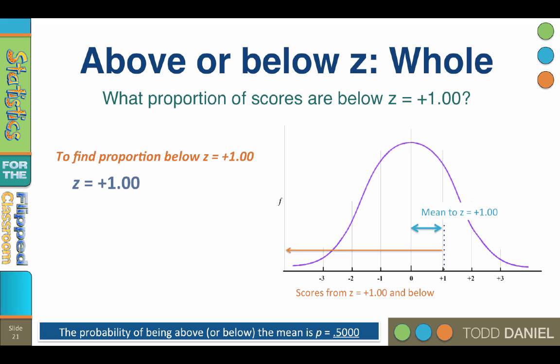First, it includes the scores from the mean to z equals positive 1.00. This we could find from our z-table. The proportion is 0.3413.